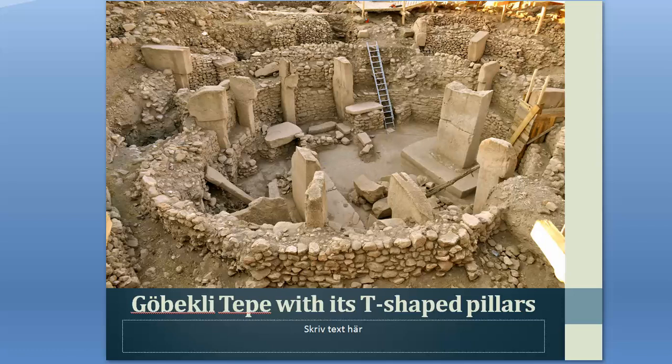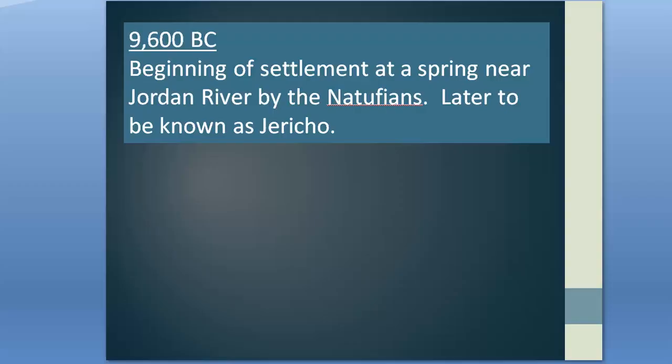Consider how early this is — thousands of years before Stonehenge or the pyramids. Around 9,600 BC, the drought and cold conditions of the Younger Dryas had come to an end. A popular camping site near a spring at the Jordan River had already been established by the Natufians. Once conditions improved, the Natufians decided to extend their stay, eventually leading to year-round habitation. Still living in semi-subterranean stone structures, these people would sow the seeds for a much larger settlement that would subsequently become famous in the Old Testament — the settlement would be called Jericho, the oldest continuously inhabited city in the world.